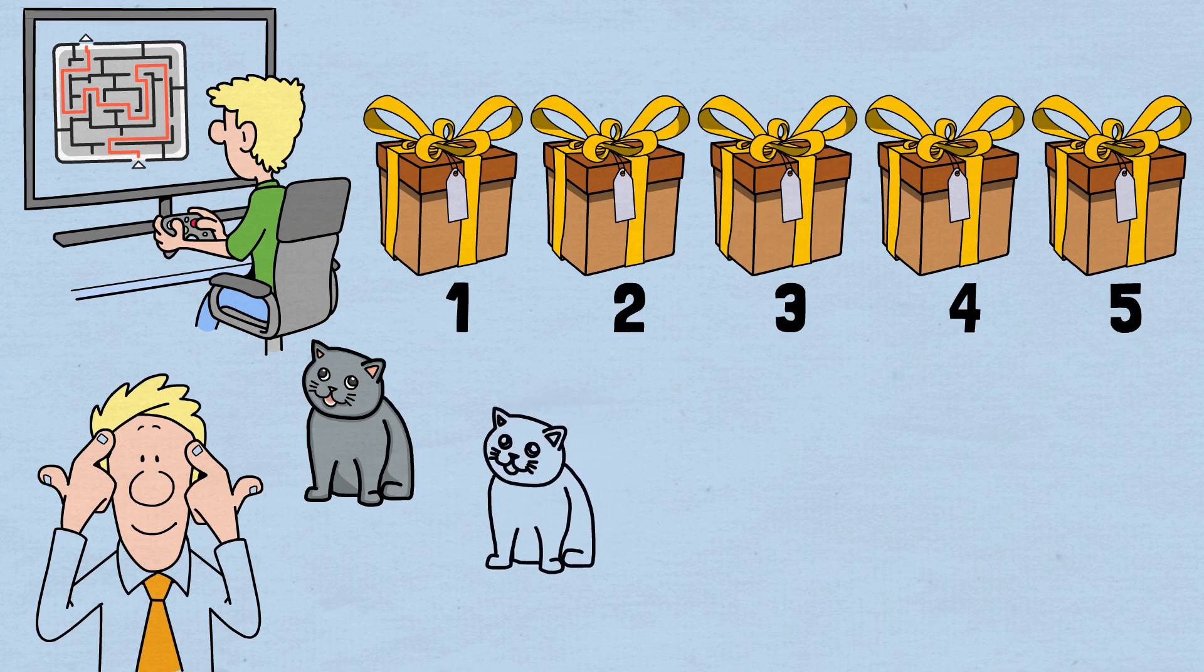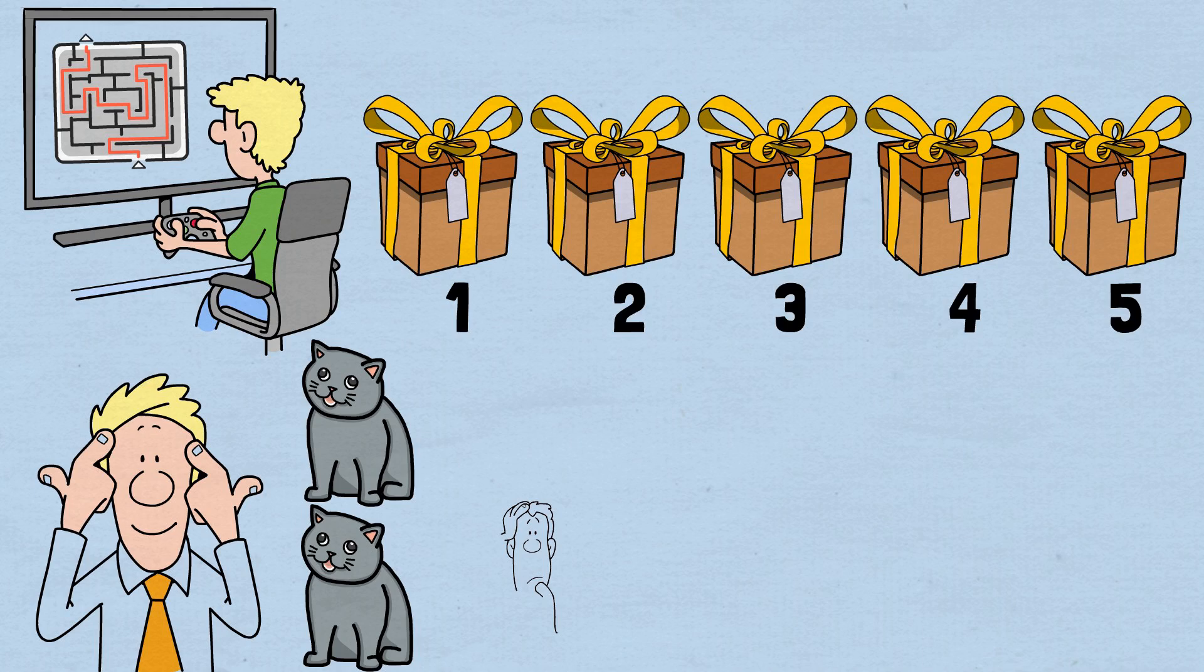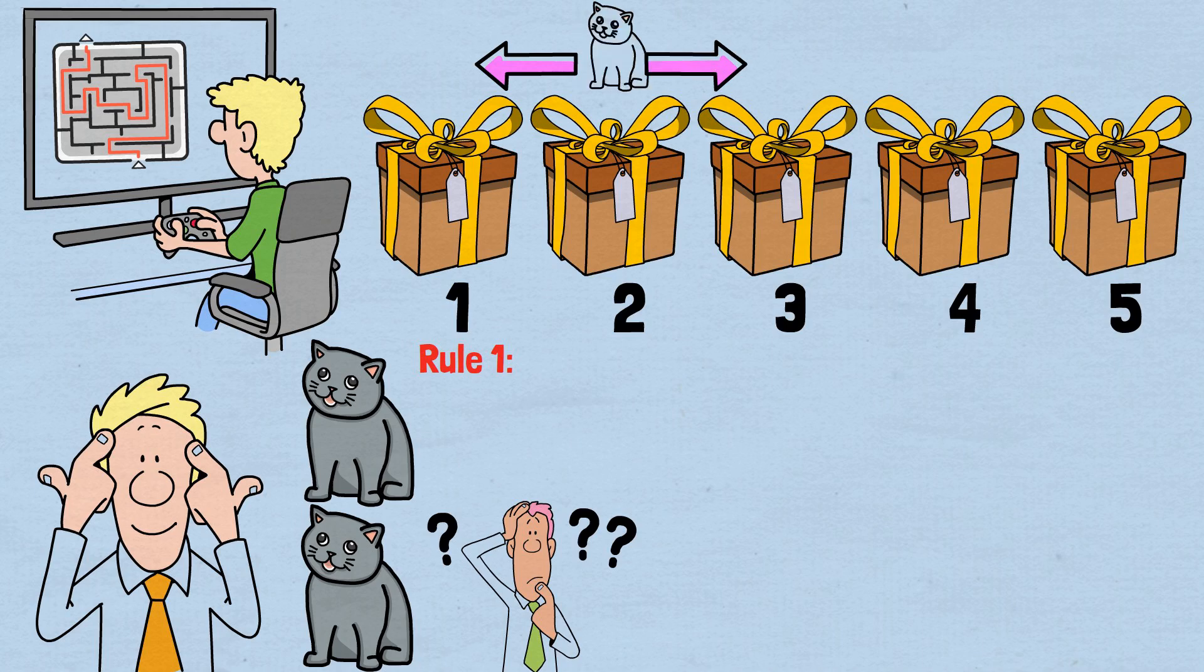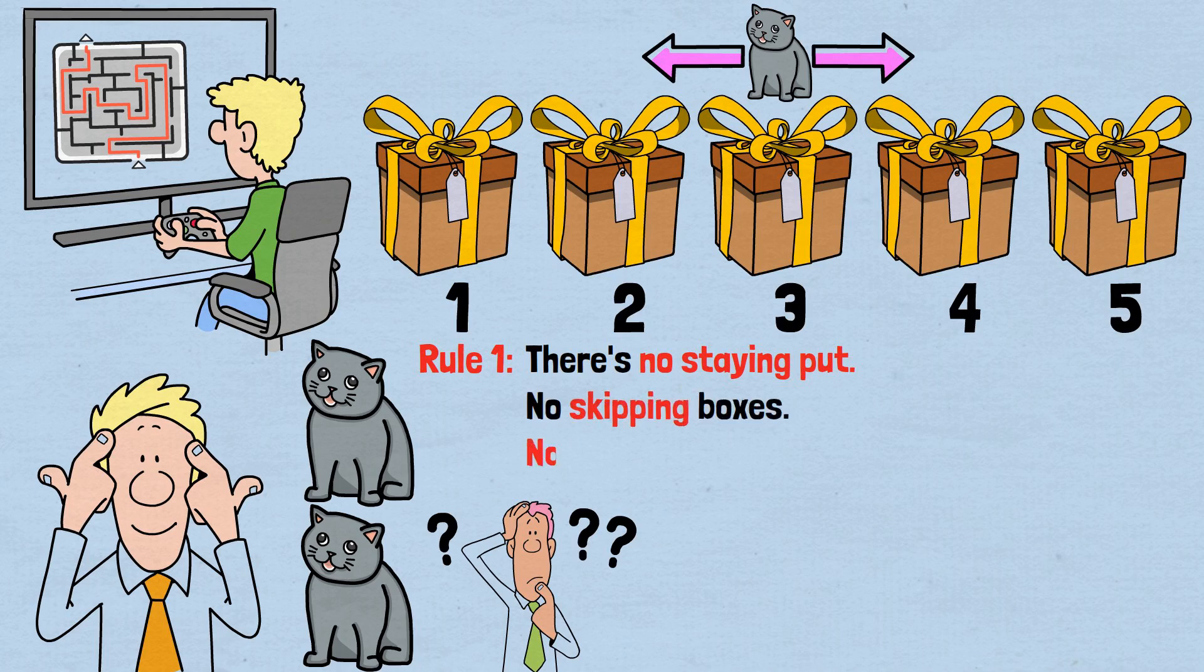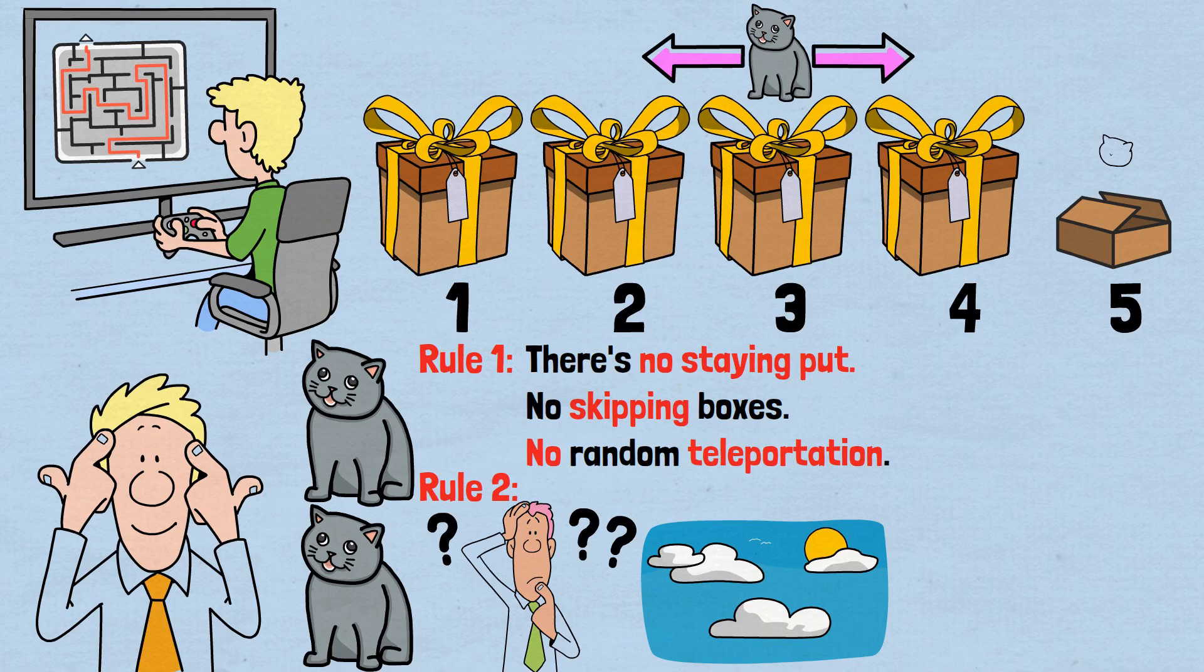This cat operates under two rules that transform a simple guessing game into a complex logical puzzle. Rule 1: Every single night without exception, the cat moves to an adjacent box, exactly one number away from where it currently is. If the cat is in box 3, it must move to either box 2 or box 4. There's no staying put, no skipping boxes, no random teleportation. Rule 2: Every morning you get exactly one chance to open a single box. If you find the cat, you win. If not, you must wait until the next morning for another attempt.